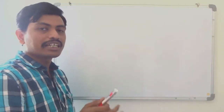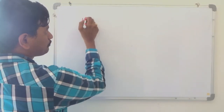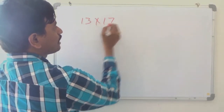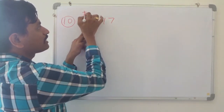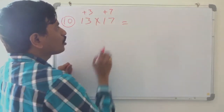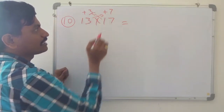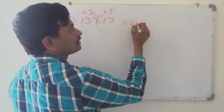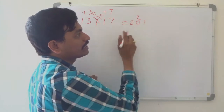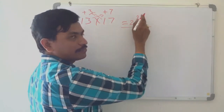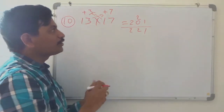Now let us see the multiplication of two numbers which are between 10 to 20. I will randomly take 13 into 17, which is nearer to 10. How much greater? Plus 3, plus 7. So cross addition: 13 plus 7 is same as 17 plus 3, so both are 20. And 7 threes are 21. Here we need only 1 digit, so I am writing 2 above 0. So 221 is the multiplication of 13 into 17.